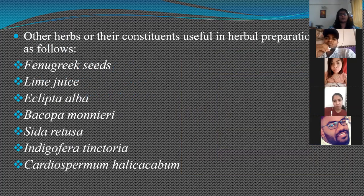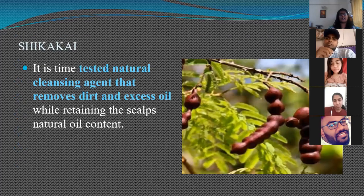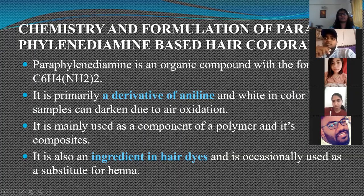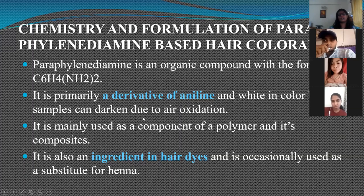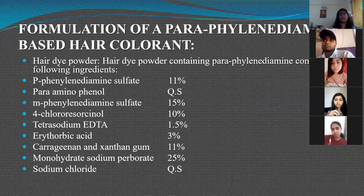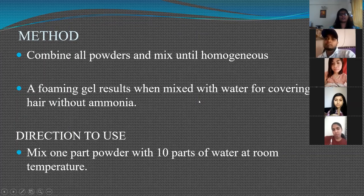Herbal hair oils are prepared by adding all herbal ingredients into oil and boiling them together until incorporated, then straining and using the oil. The paraphenylenediamine-based hair colorant darkens when exposed to air and is an ammonia-free preparation that forms a foaming gel when mixed with water and can be applied with a brush.